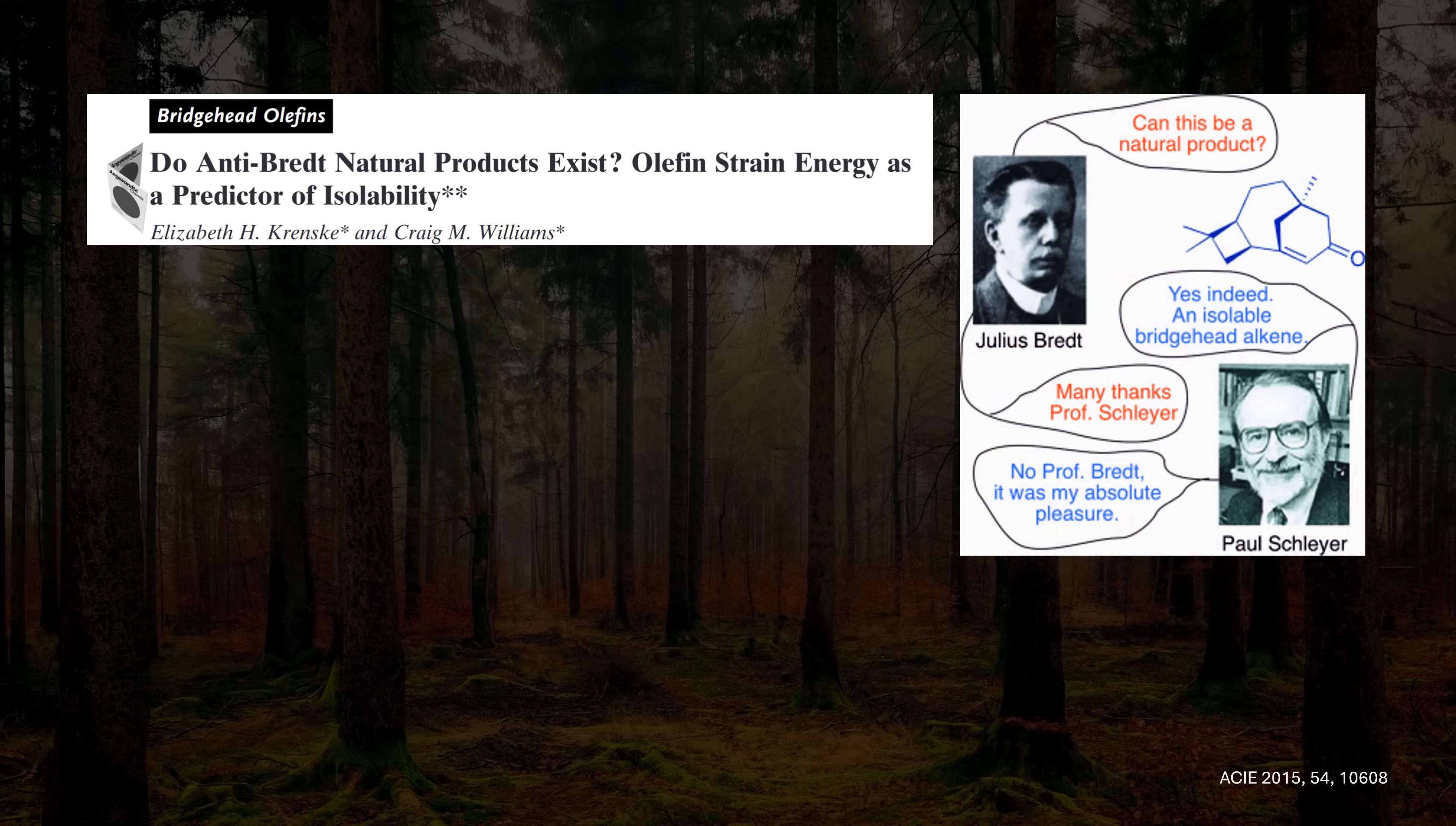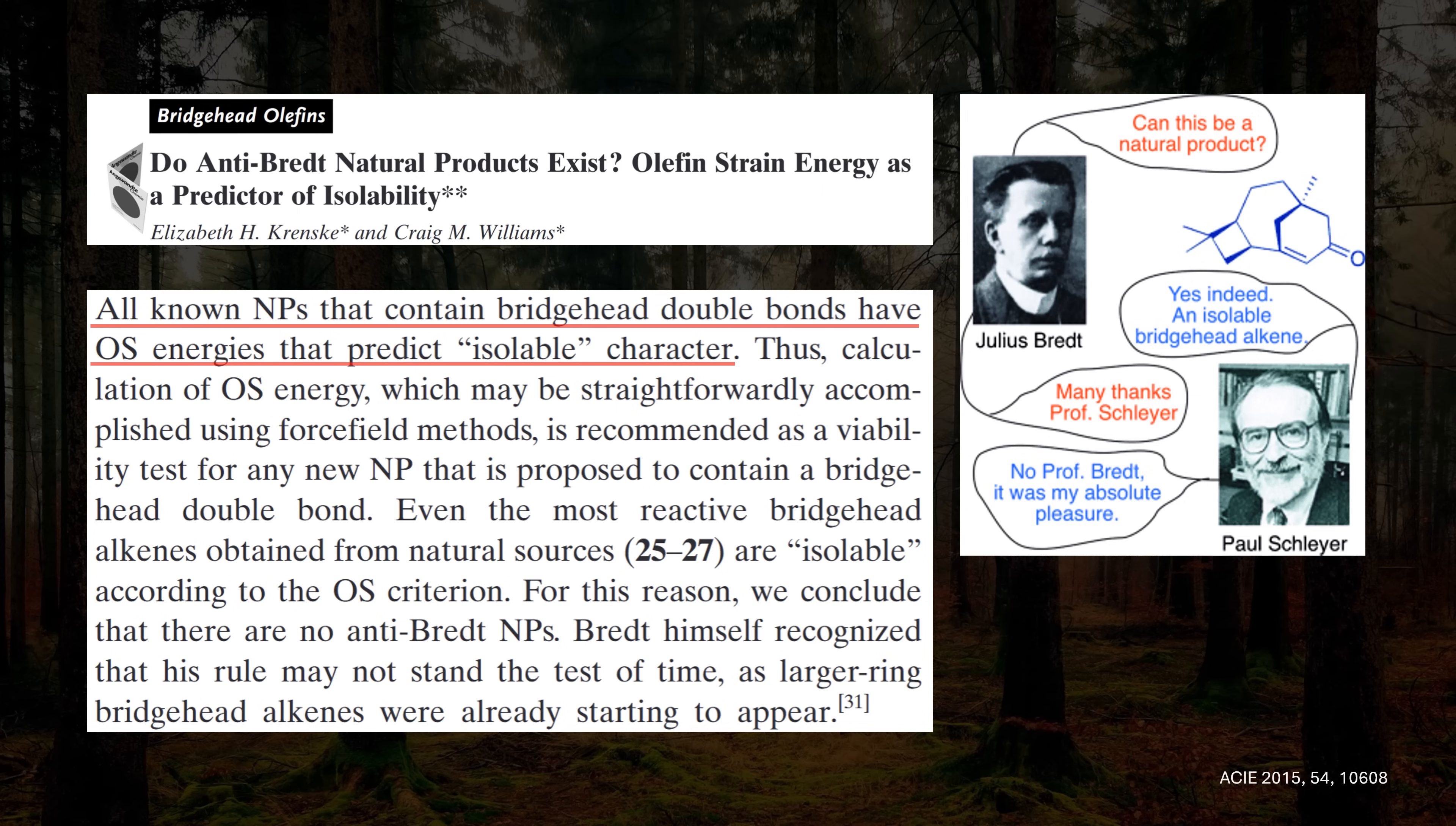So these are some really naughty natural products. By the way, can we appreciate this hilarious table of contents image? This gem was taken from an interesting paper that revisited the classification of stability based on olefin strain. It turns out that all known natural products are predicted to be isolable given their relatively modest strain. As we've seen, this comes from the larger rings.